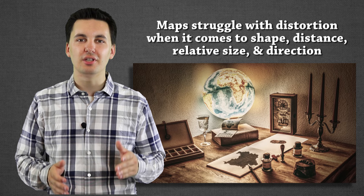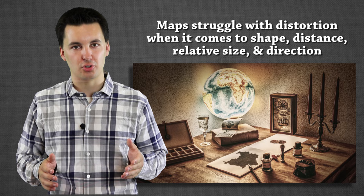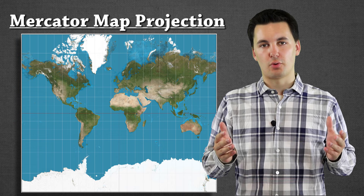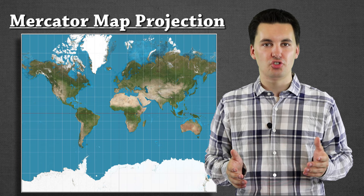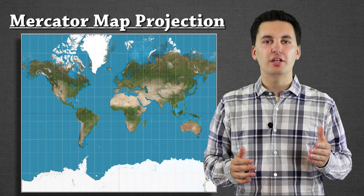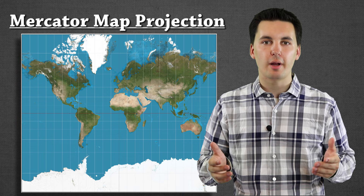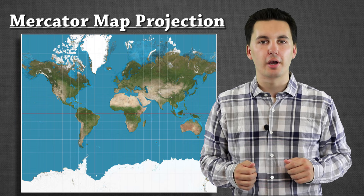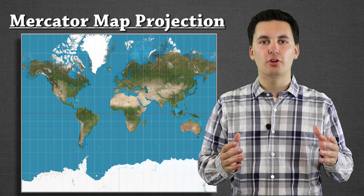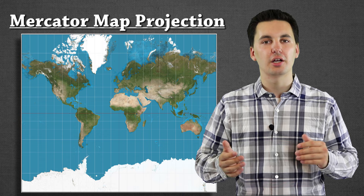Our first map projection is the Mercator map. The Mercator map is in the shape of a rectangle and it excels at direction. It's actually been used a lot as a marine navigation tool because our longitude and latitude lines create 90-degree angles, making it very easy to get from point A to point B. It is very precise when it comes to direction, removing distortion in that regard. Google used the Mercator map for a very long time, though recently they've started to change it as you zoom out.